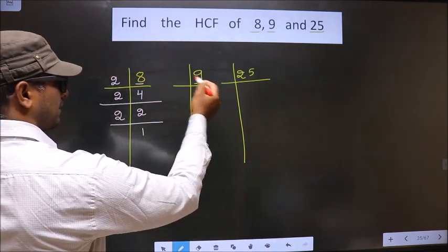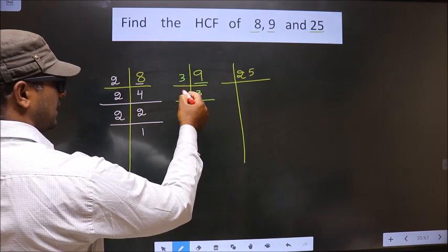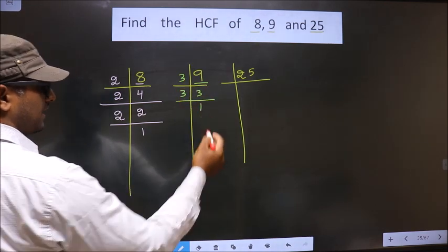Here we have 9. 9 is nothing but 3 times 3. Now, 3 is a prime number, so we take 3 and 1.